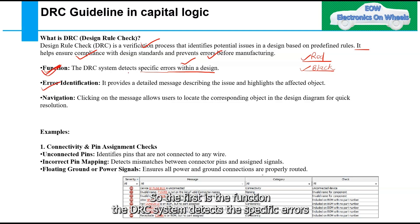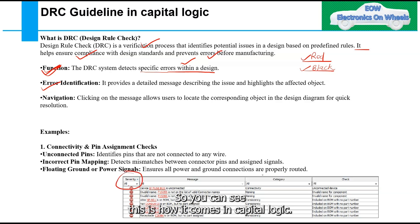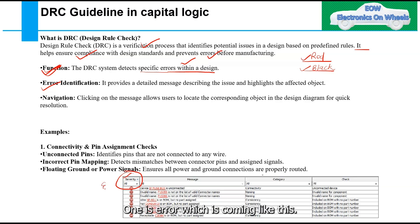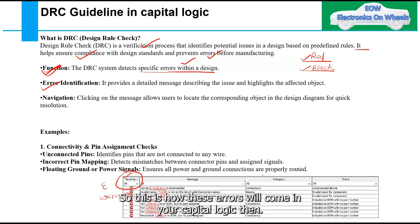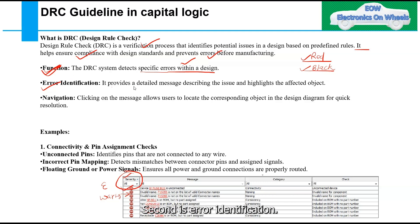The DRC system detects specific errors within a design. In Capital Logic, inside the CVIT view, there are two options: errors and warnings. Warnings can be ignored, but errors must be cleared out.